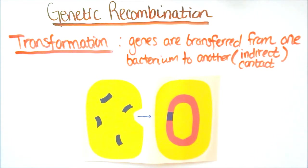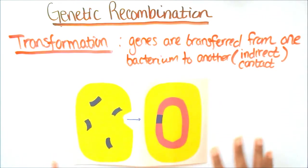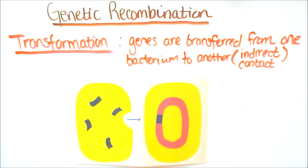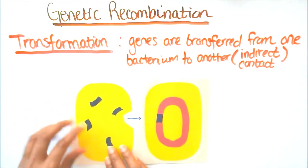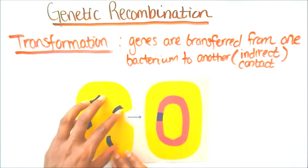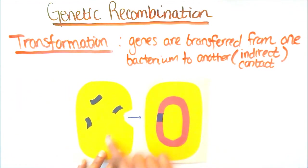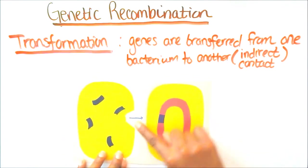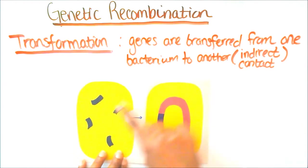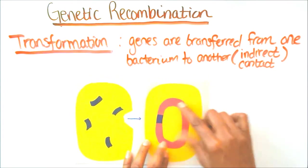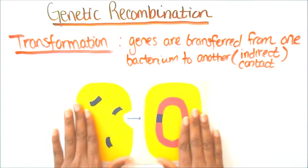First we'll start off with transformation. Transformation is when genes are transferred from one bacterium to another through indirect contact. Here we have one bacterium with gene fragments inside. Once the cell ruptures, everything inside leaks out, and those genes float freely outside the cell, allowing another bacterium to pick up the gene and incorporate it into its DNA. This is transformation.